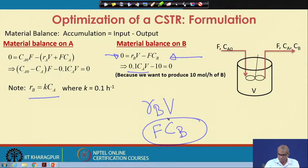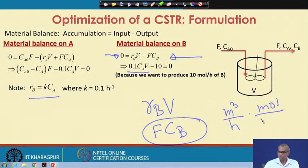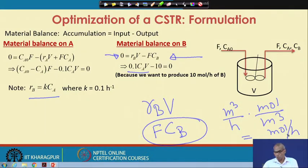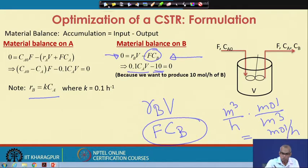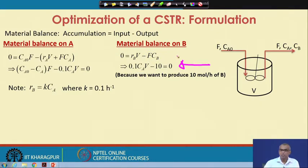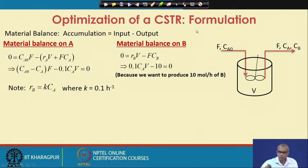Looking at units: F is volumetric flow rate in meter cube per hour and concentration is moles per meter cube, so F × C_B is moles per hour. We set F × C_B = 10 because we want to produce 10 moles per hour of B to meet the product specification. This leads to the mass balance equation on B.